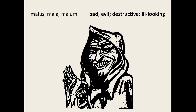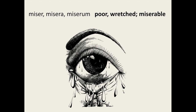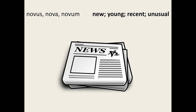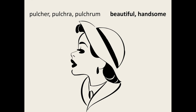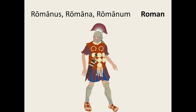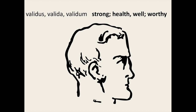Malus, mala, malum — bad, evil, destructive, ill-looking. Miser, misera, miserum — poor, wretched, miserable. Novus, nova, novum — new, young, recent; it can also mean unusual or strange. Parvus, parva, parvum — small. Pulcher, pulchra, pulchrum — beautiful or handsome, which we have seen previously. Romanus, romana, romanum — Roman; this can also be used as a noun as well as an adjective. Validus, valida, validum — strong, healthy, well, worthy.